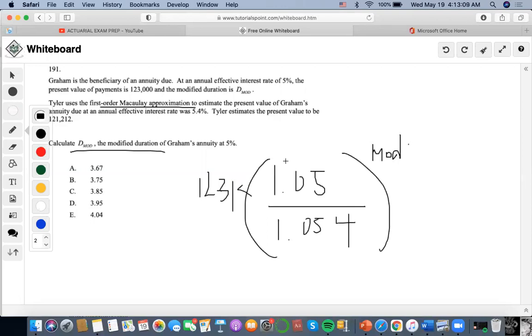So they're asking for the modified duration, right? So we're gonna have to keep that in mind once we find the Macaulay duration, right? And then we set this whole thing equal to what Tyler estimates the present value to be $121,200, right?